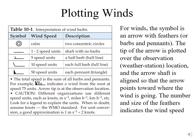A reminder on how we plot winds: we use arrows and feathers, with the point of the arrow on the observation point and feathers on the back. The arrow points in the direction the wind is moving. Calm winds are shown as two concentric circles; one to two speed units uses a shaft with no barbs; five speed units uses a half barb; ten speed units uses a full long bar. You add bars together up to 50, at which point you add a flag, and you can add as many flags as needed.